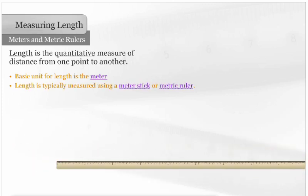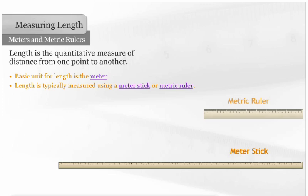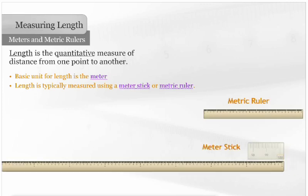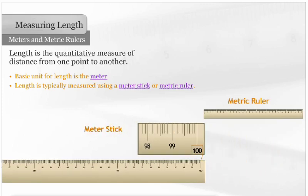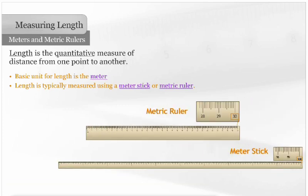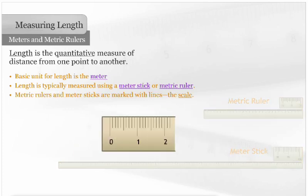Length is typically measured using a meter stick or metric ruler. A meter stick is 100 centimeters in length. A metric ruler is typically between 15 and 30 centimeters in length. Metric rulers and meter sticks are marked with lines. All the lines are called the scale.